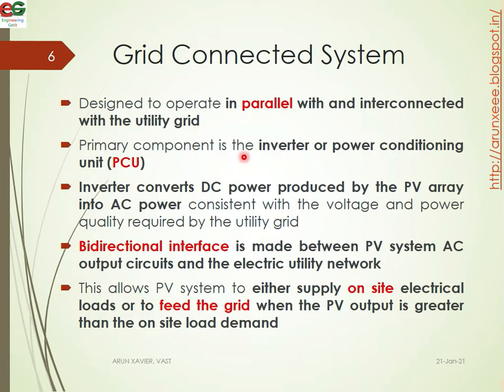The inverter converts DC power produced by the PV array into AC and maintains the voltage and power quality required by the utility grid. A bi-directional interface is made between the PV system AC output circuit and the electrical utility grid.